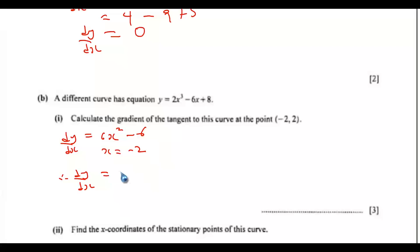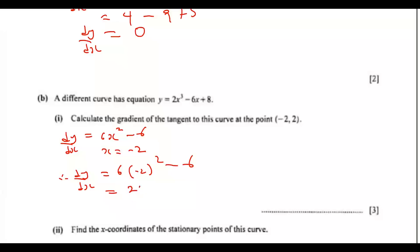So therefore dy/dx, which is the gradient, equals 6 into negative 2 squared minus 6. Negative 2 squared is positive 4, times 6 gives 24, so minus 6. The gradient is equal to 18, so that would be the gradient.